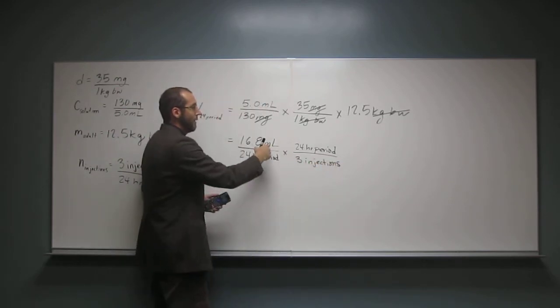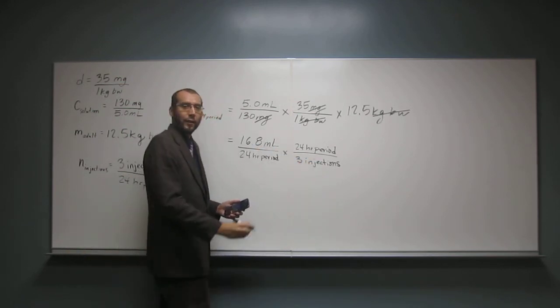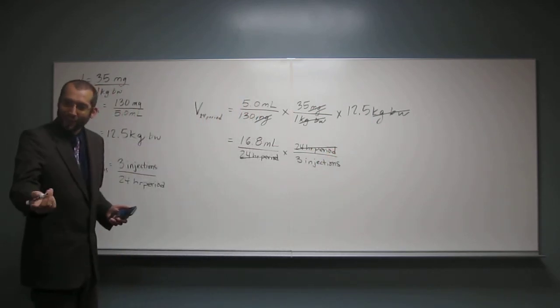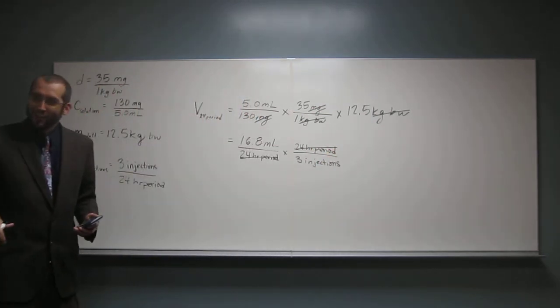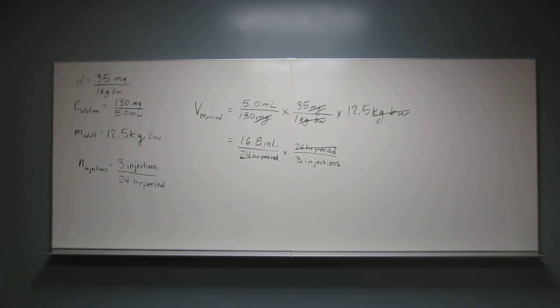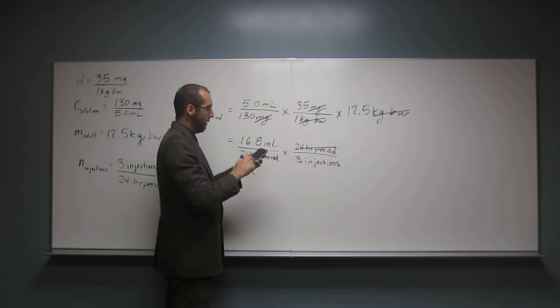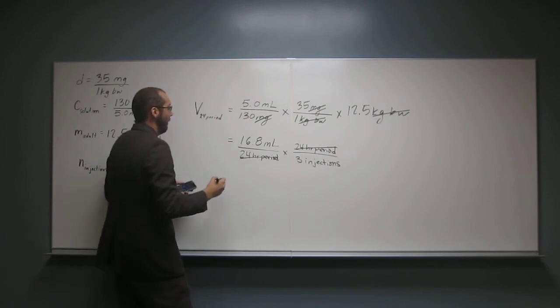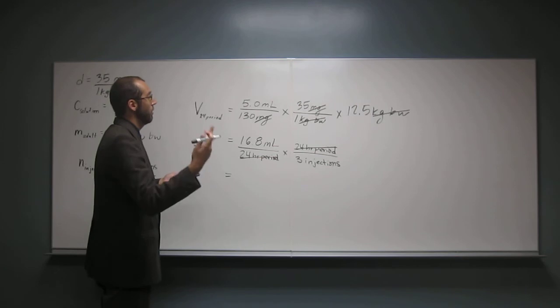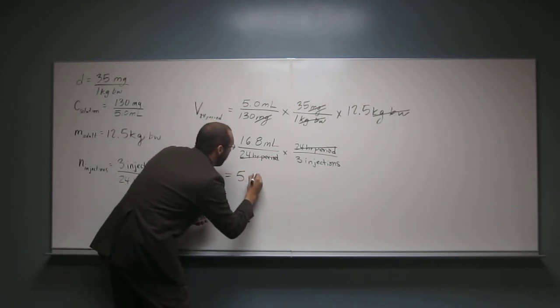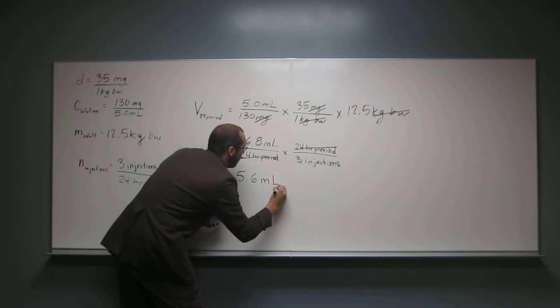Now we don't have to worry about 24, so we're just going to take that and divide it by three. And so each one of the injections to two significant figures, so it's better that we did it this way, is going to be 5.6 milliliters. And I think that's the right answer.